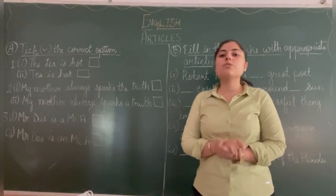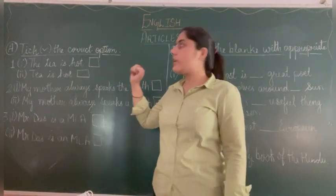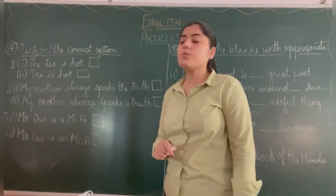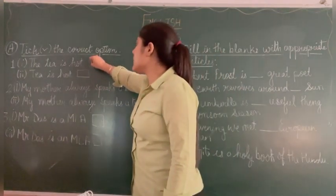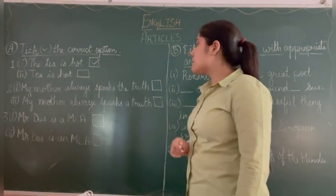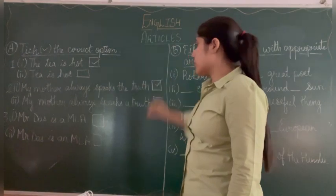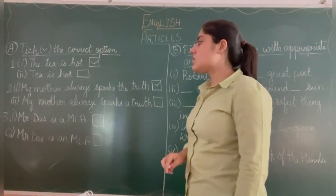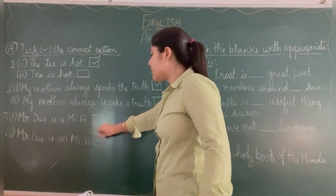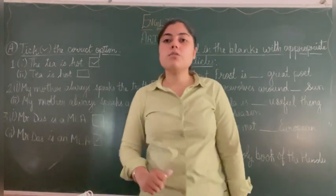Now let's see some exercises related to articles. Choose the correct article. 'The tea is hot' or 'A tea is hot' — which is correct? 'The tea is hot' — because it is specific. 'My mother always speaks the truth.' So it's 'the truth'. 'Mr. Das is a animal' or 'Mr. Das is an animal' — because 'an' is used before a vowel sound, so 'an animal' is correct.